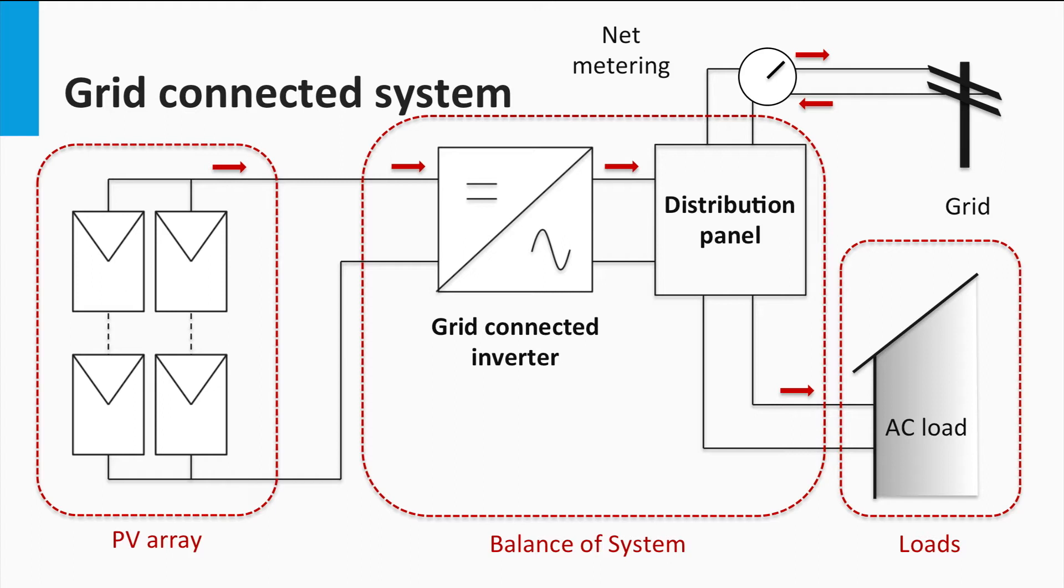A net meter is also usually found in this type of PV system. A net meter is nothing but a two-way power measuring instrument. This meter takes into account not only the power consumed from the grid by the consumer, but also the power fed to the grid by the PV system.